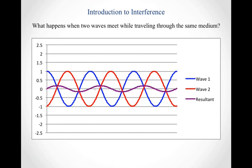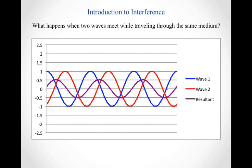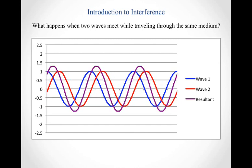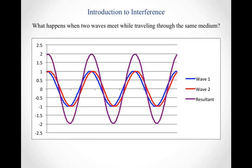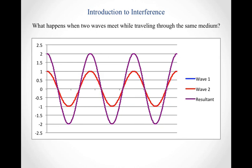If we continue to shift wave 2 and keep increasing its phase, the resultant starts coming back. We can think of it as: initially the peak of wave 2 was lined up with one peak of wave 1, and now we've shifted it so far that the peak of wave 2 is starting to line up with the next peak of wave 1. The resultant wave builds up again, and its amplitude keeps increasing until the waves are perfectly lined up once more, giving a resultant with twice the amplitude of the individual waves.